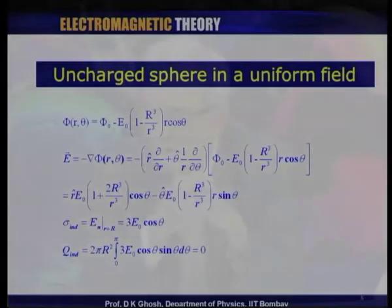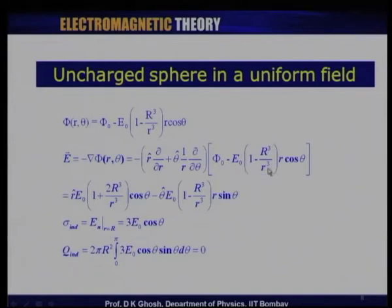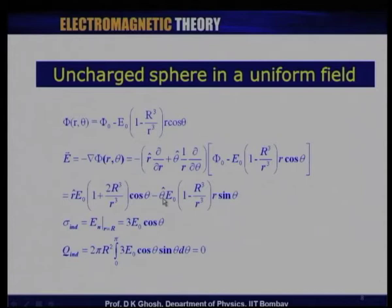Once we have the expression for the potential, we can find the electric field by simply taking the gradient. Since there is no azimuthal dependence, the gradient is simply the r unit vector times d by dr plus the theta unit vector times 1 over r d by d theta, acting on this potential. The electric field is given by the r unit vector times a term proportional to cos theta, and the theta unit vector times a term proportional to sin theta.